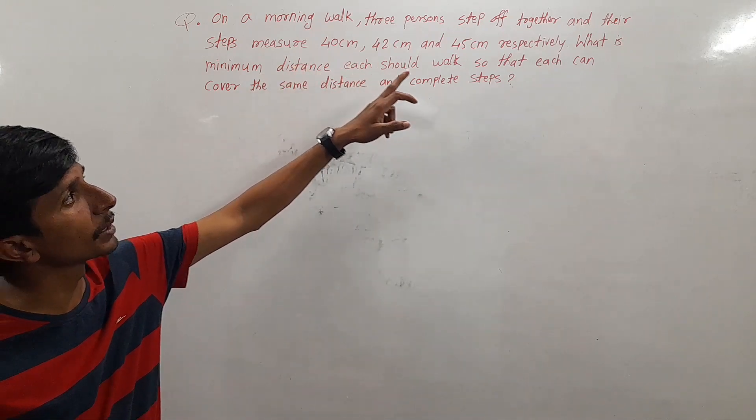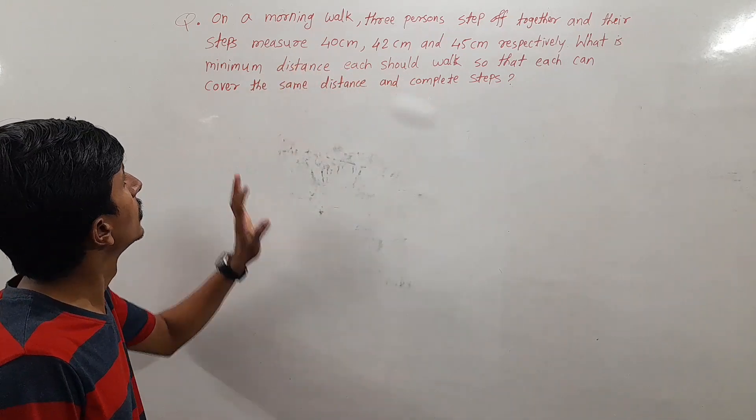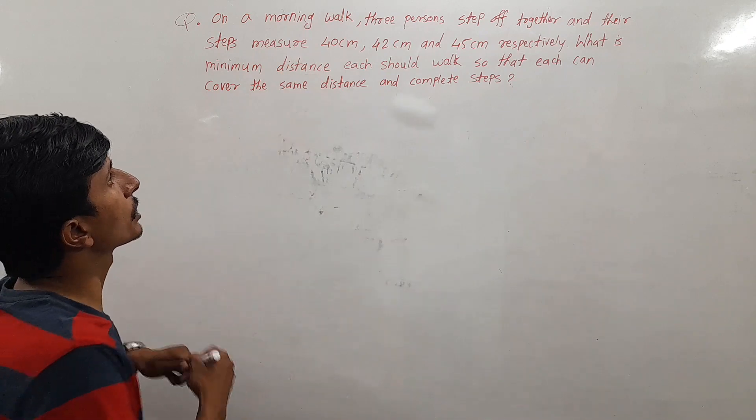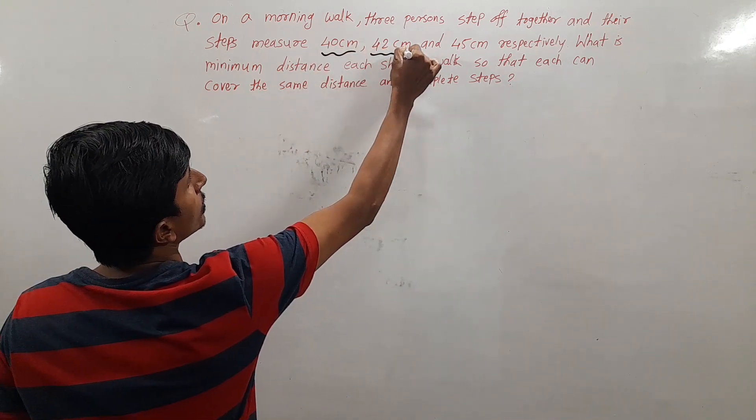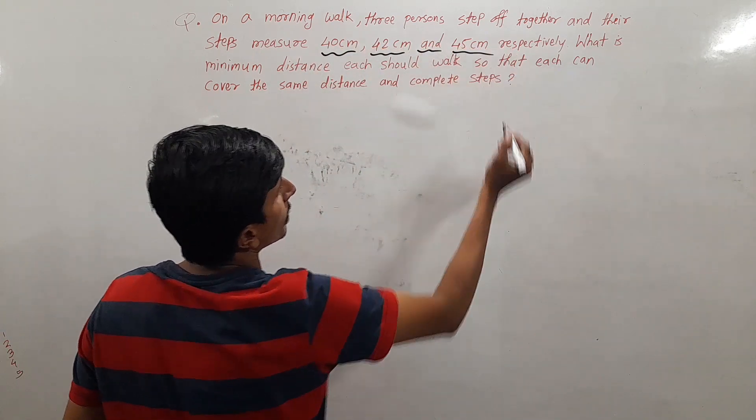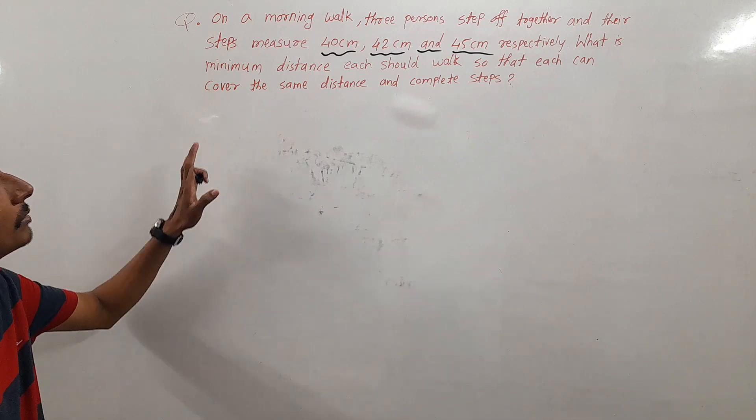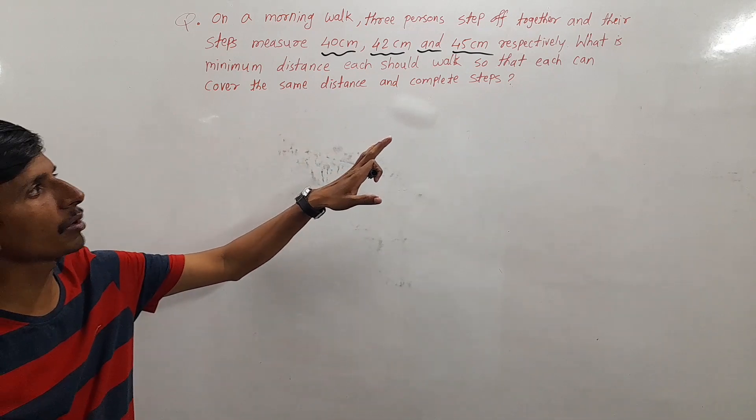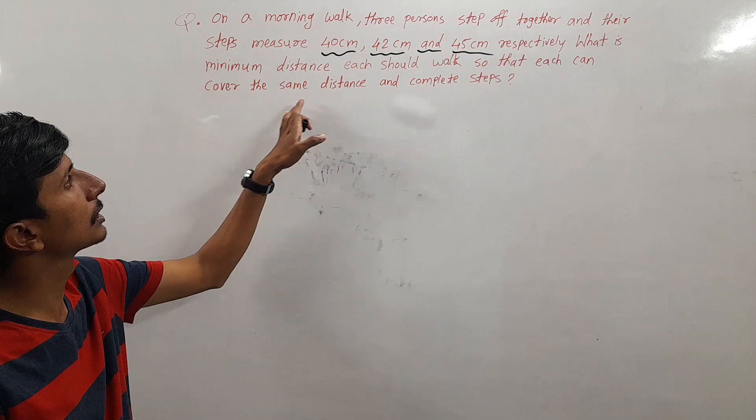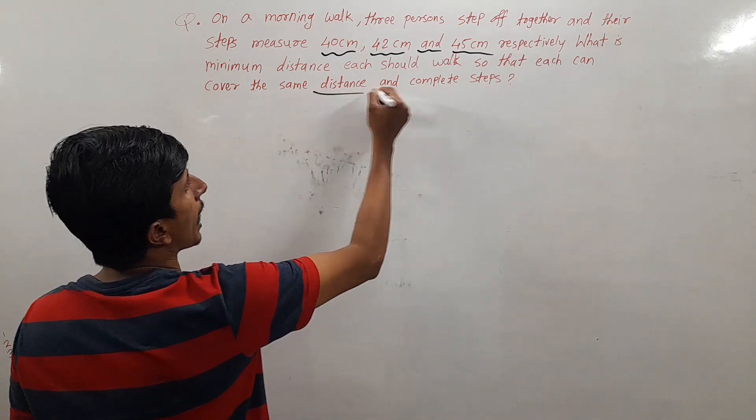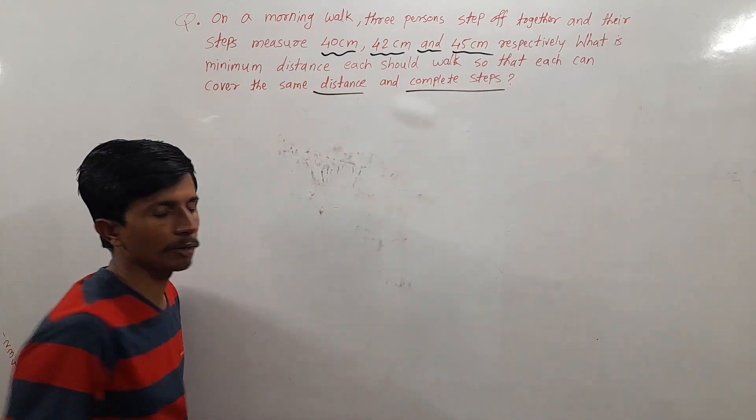On a morning walk, three persons step off together and their steps measure 40 cm, 42 cm, and 45 cm respectively. What is the minimum distance each should walk so that each can cover the same distance and complete steps? In this question,